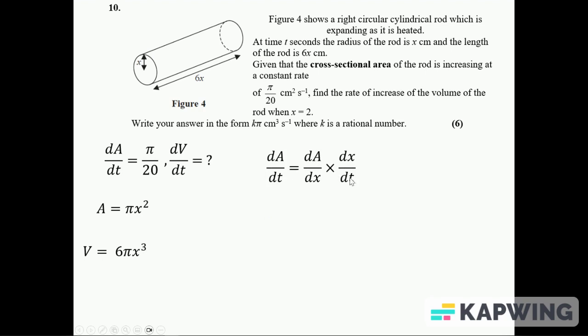Here's my rate of change equation, just the chain rule really. I've got dA over dt here with a dx on the bottom and a dx on the top. We know this - it tells us in the question - and we've got to find this.